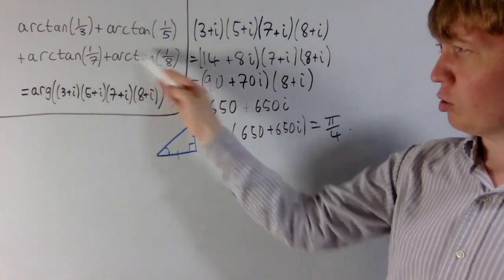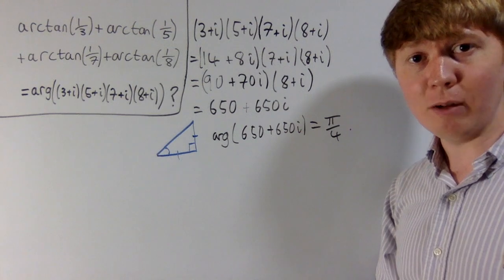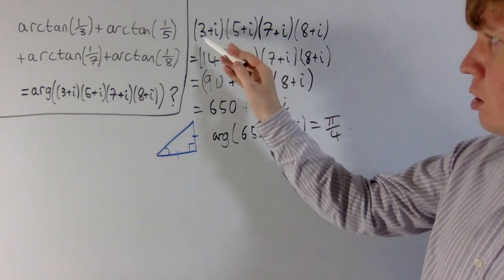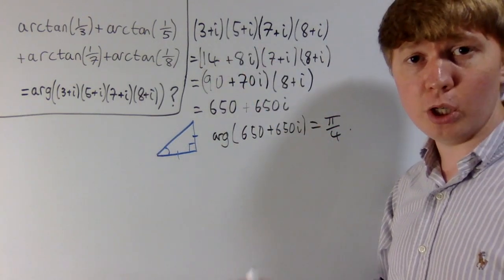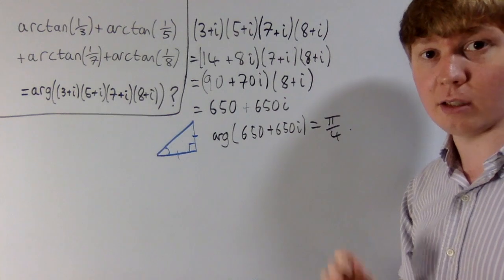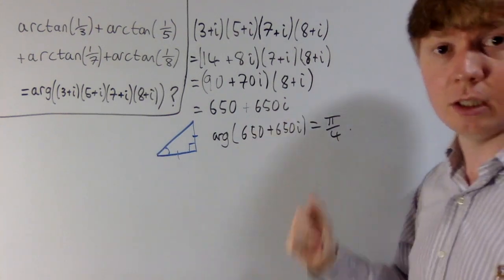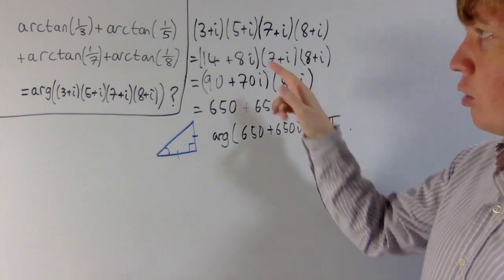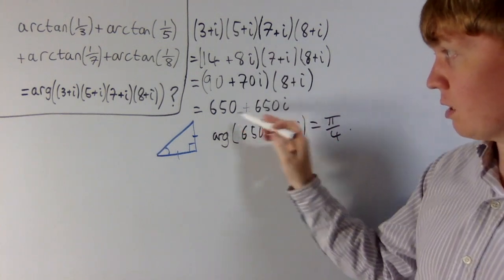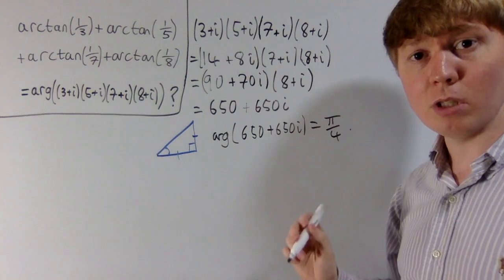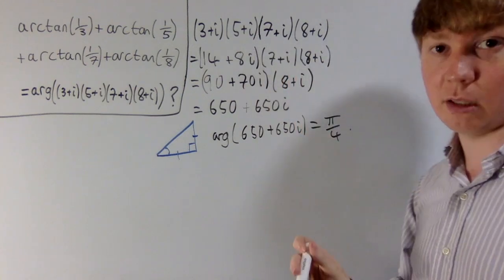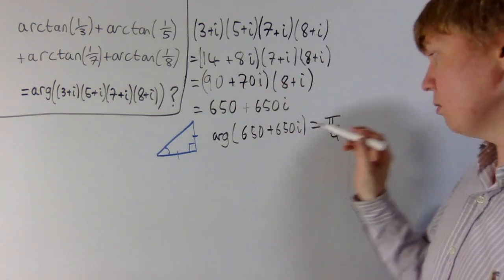We need to double-check we haven't made a mistake and are not off by a multiple of 2π. It turns out this is fine: starting with three plus i in the first quadrant, multiplying by five plus i gives fourteen plus eight i — still in the first quadrant. Multiplying by seven plus i gives ninety plus seventy i — still in the first quadrant. Finally, six hundred and fifty plus six hundred and fifty i is still in the positive quadrant. All arguments are small enough that adding them just gives pi over four.